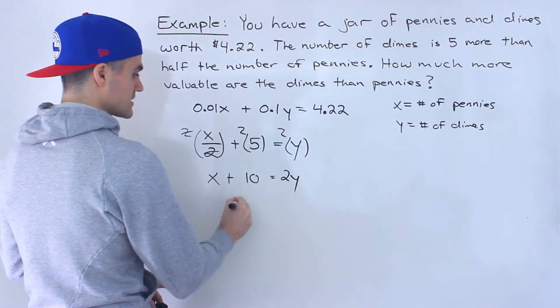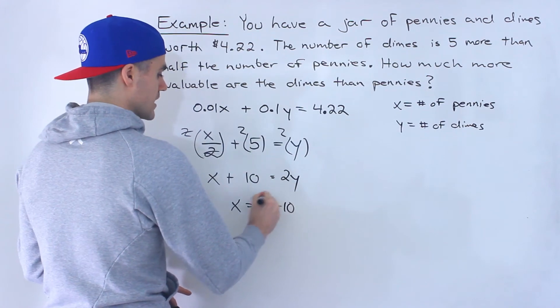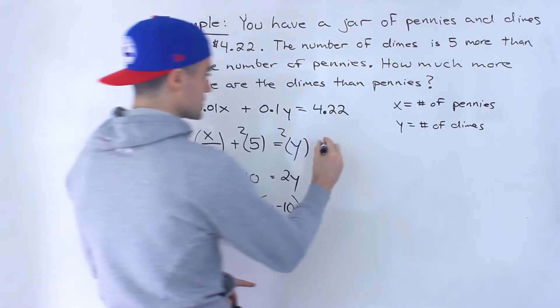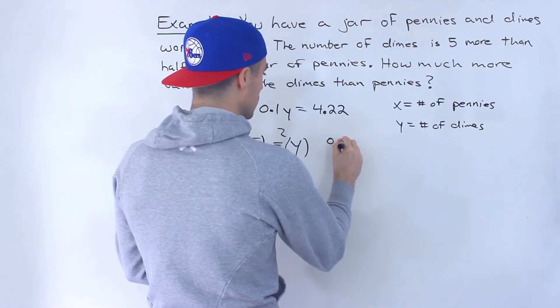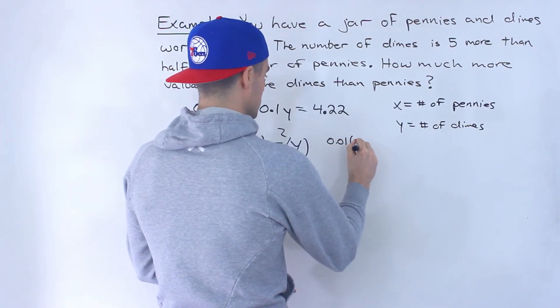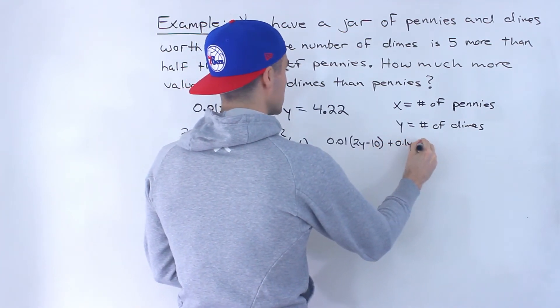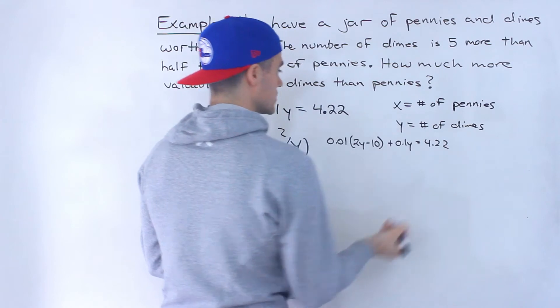And then what we could do, let's isolate for this x, which is 2y minus 10. And then I'm going to take this and I'm going to plug it in for this x value.